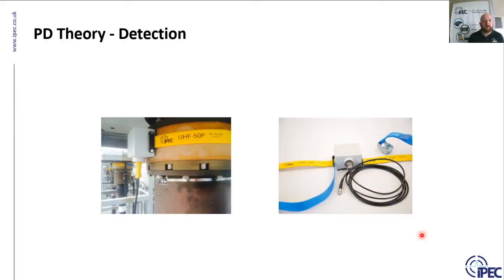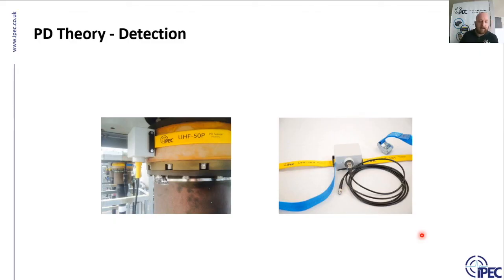The final sensor type is UHF — ultra high frequency sensors. UHF tends to focus on EHV GIS applications. GIS is completely sealed, so the only signals that escape are very high frequency — ultra high frequency — and we use UHF sensors to detect the PD inside the GIS.